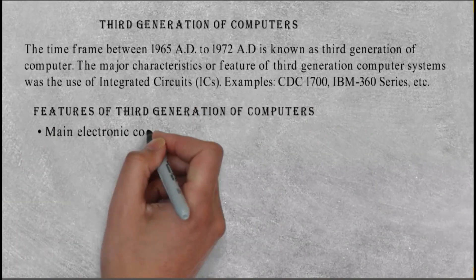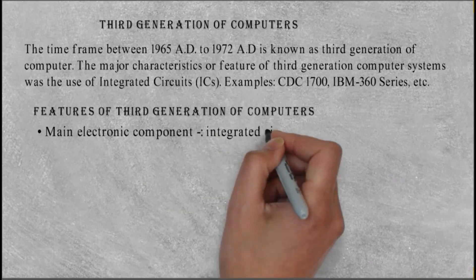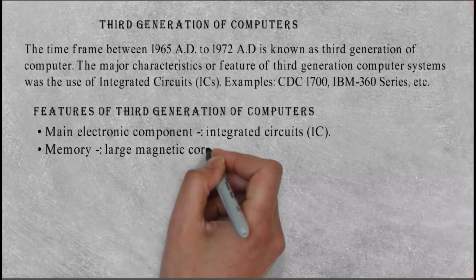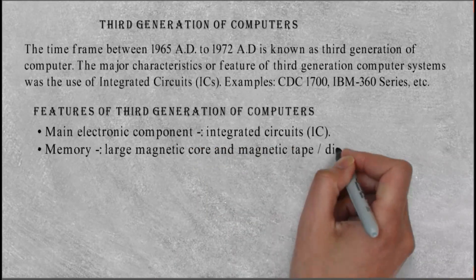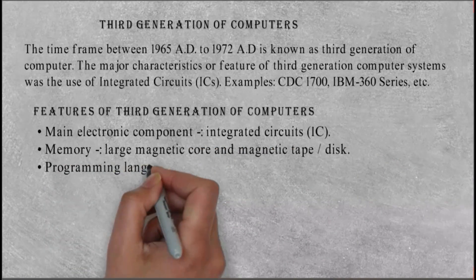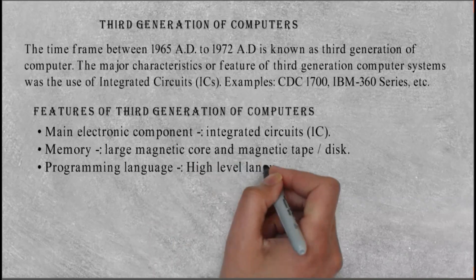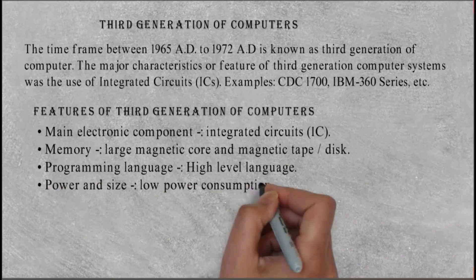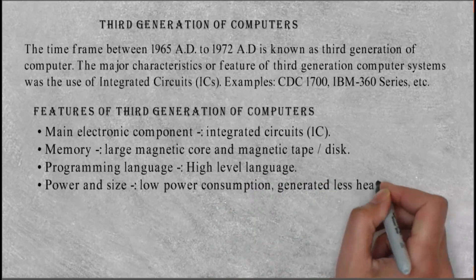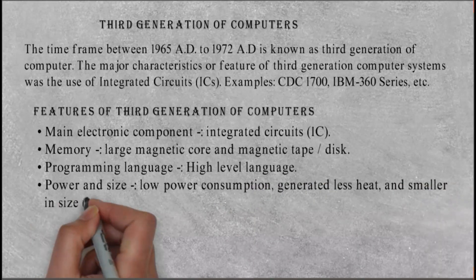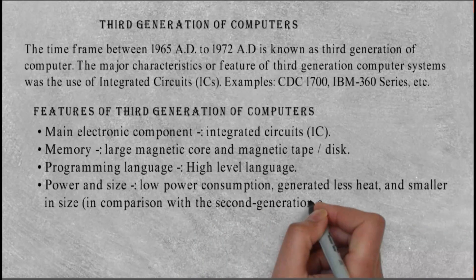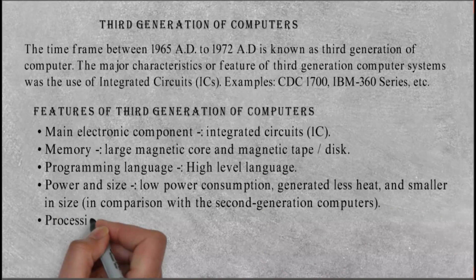Features of third generation of computers: Main electronic component: integrated circuits (IC). Memory: large magnetic core and magnetic tape/disk. Programming language: high level language. Power and size: low power consumption, generated less heat, and smaller in size in comparison with the second generation computers. Processing speed: picoseconds.